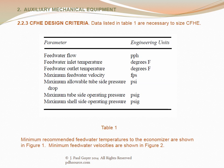Data listed in table one are necessary to size the CFHE. These include feed water flow, feed water inlet temperature, feed water outlet temperature, maximum feed water velocity, maximum allowable tube side pressure drop, maximum tube side operating pressure, and maximum shell side operating pressure. Minimum recommended feed water temperatures to the economizer are indicated in Figure 1, and minimum feed water velocities are shown in Figure 2. Each CFHE will be a U-tube type heater to minimize stresses caused by thermal expansion; tubes of stainless steel construction will minimize corrosion and erosion.